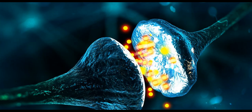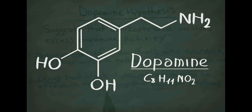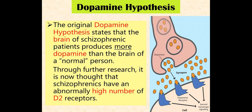Neurotransmitters pass on their message in the form of a small electric charge. Dopamine is an important neurotransmitter that regulates mood and attention, and it seems to be linked to schizophrenia in a number of ways. The dopamine hypothesis was proposed by Arvid Carlsson and suggests that schizophrenia is caused by too much dopamine or too many dopamine receptors in key areas of the brain.